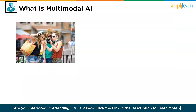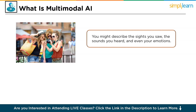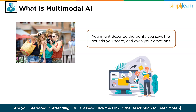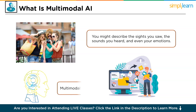Imagine you are showing a friend your vacation photos. You might describe the sights you saw, the sounds you heard and even your emotions. This is how humans naturally understand the world, by combining information from different sources. Multimodal AI aims to do the same thing. Multimodal refers to two different ways of communicating information like text, speech, images and videos, where AI stands for artificial intelligence — systems that can learn and make decisions. So, multimodal AI is a type of AI that can process and understand information from multiple sources, just like you do when you look at your vacation photos.